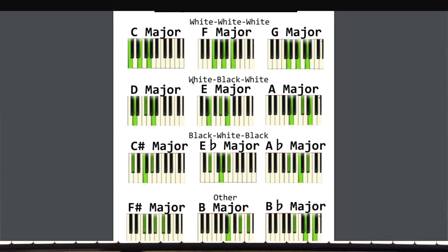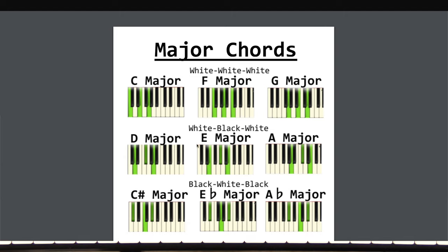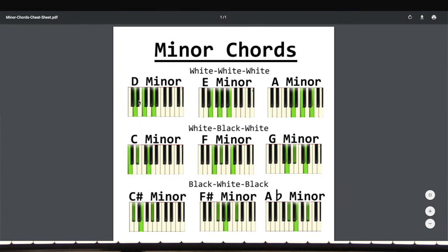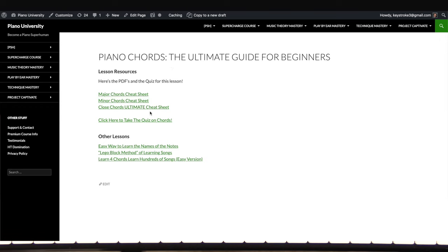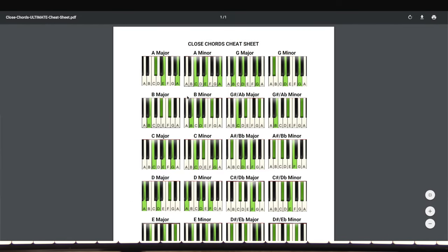Some chords have the pattern white-black-white, and others have black-white-black. Knowing the pattern is very beneficial when memorizing chords because you're memorizing patterns you can use across multiple chords rather than random notes. There's also a minor chords cheat sheet that looks the same but with different chords and patterns. Then download the last cheat sheet — the Close Chords Ultimate Cheat Sheet. It looks complicated but we'll simplify it later. This is the cheat sheet we'll use when learning an actual song.